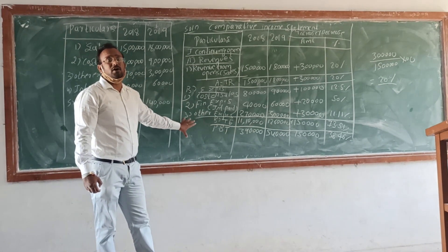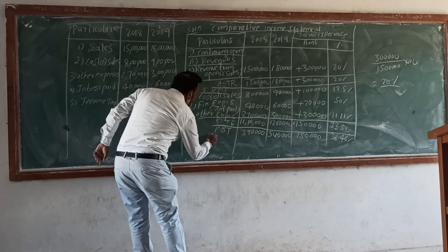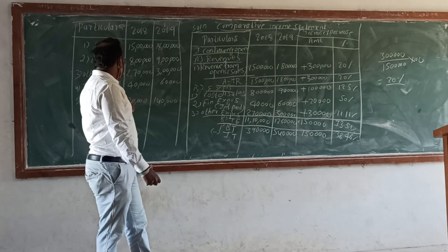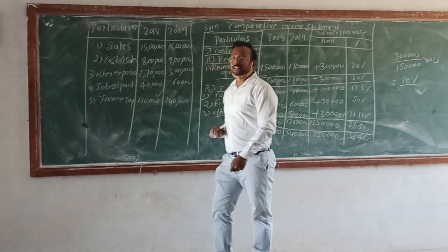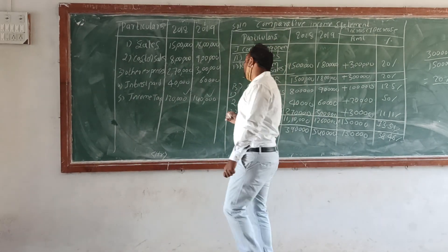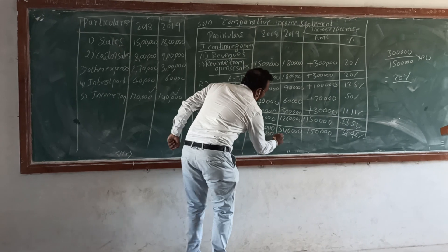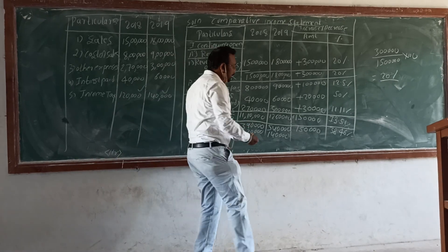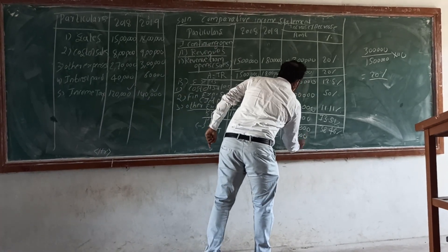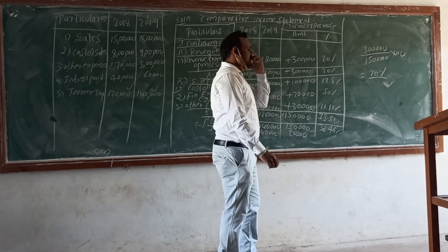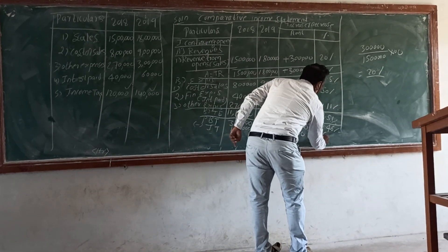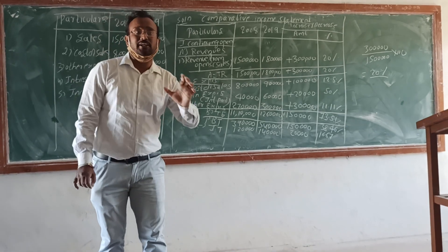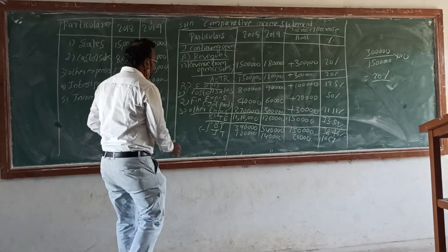Income tax: first year is 1,20,000 and second year is 1,40,000. The difference is 20,000 and the percentage increase is 16.67%.